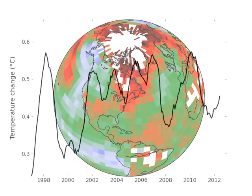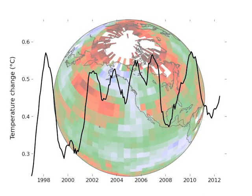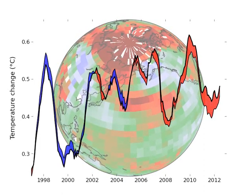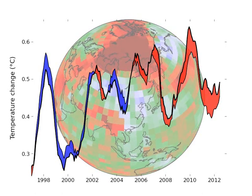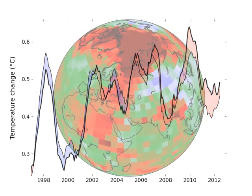What does this mean for the global temperature record? We used the hybrid satellite method to restore the missing regions in the Met Office data. Our results suggest that since 1997, the globe has been warming two and a half times faster than the Met Office figures.